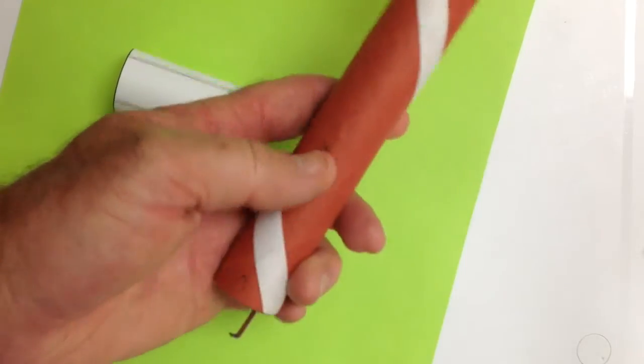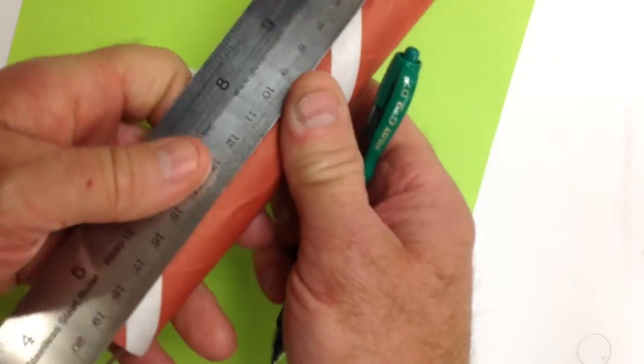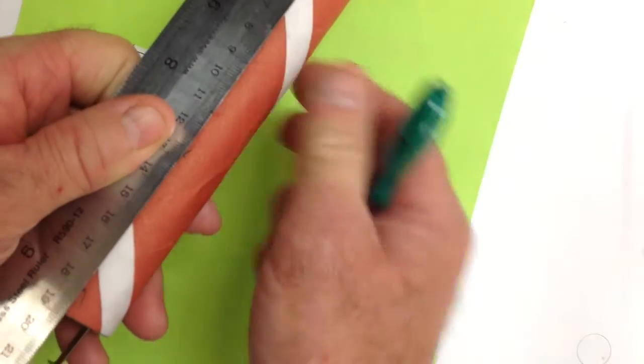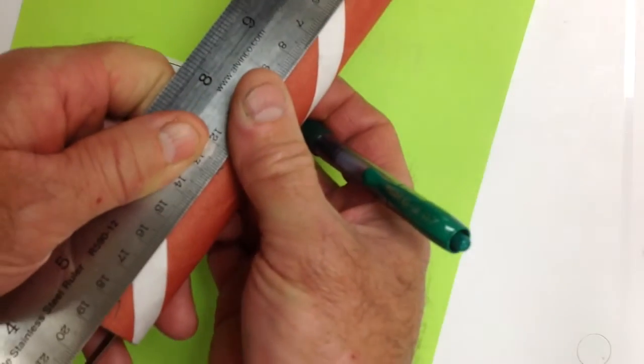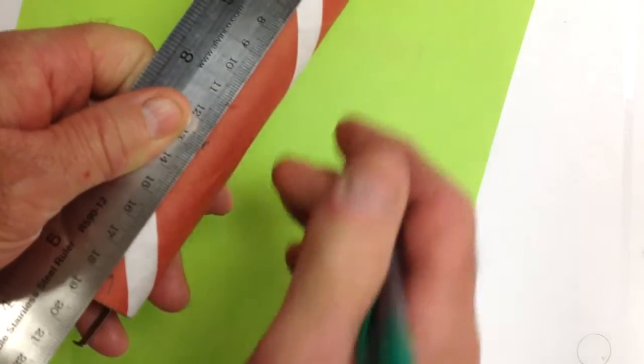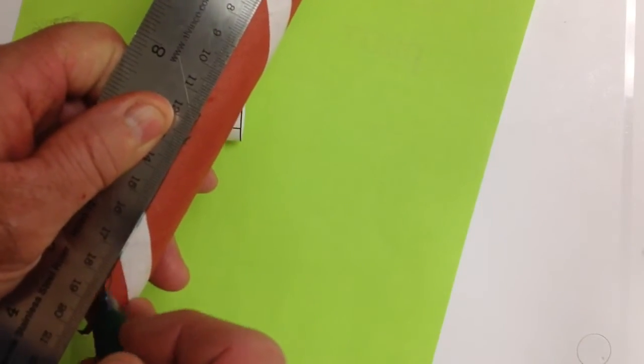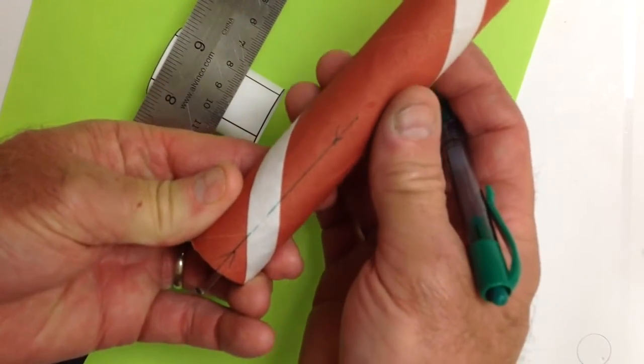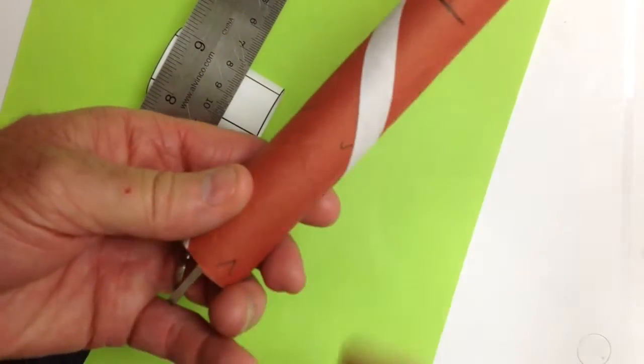Next, you're going to take a ruler, and you're going to draw a line right through the middle of those Vs so it looks something like that. And do all three or four of those.